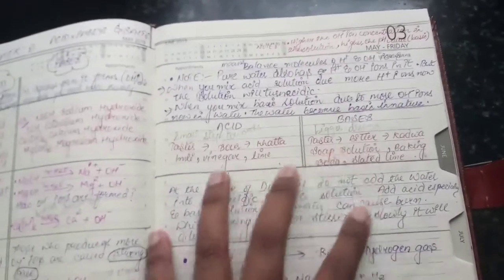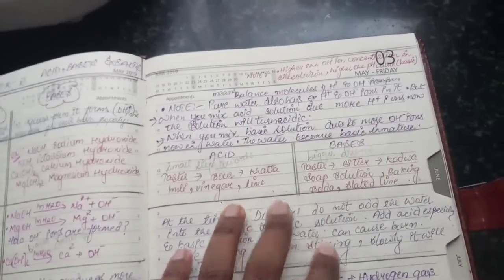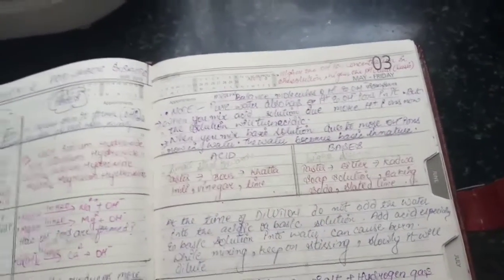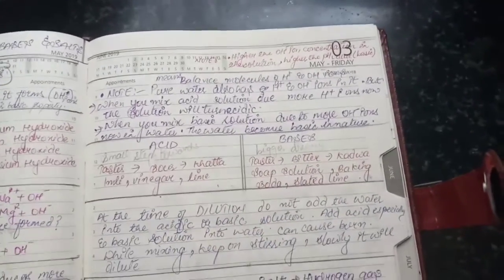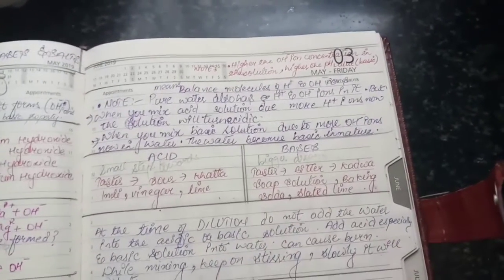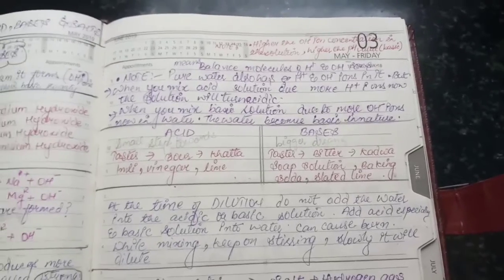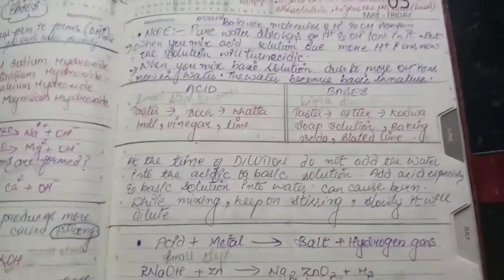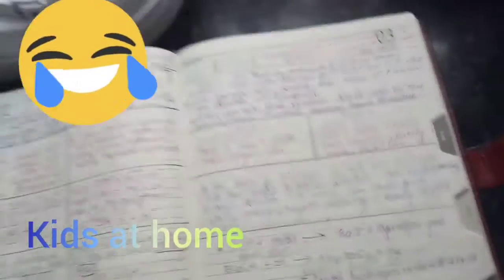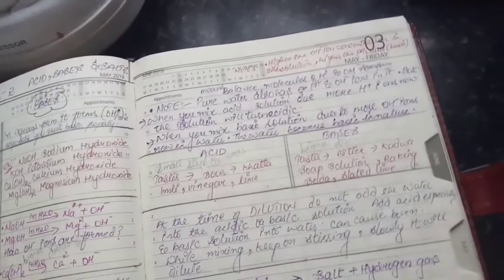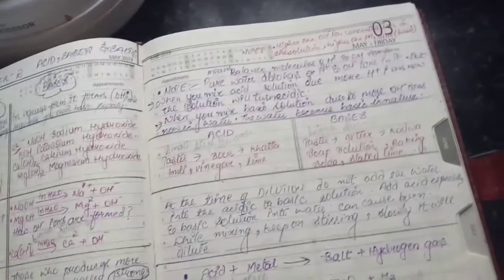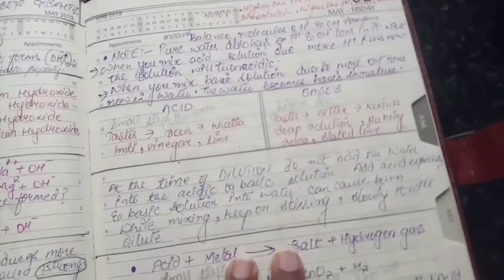As we have seen, inside the acid it is sour taste. Base is bitter taste. If you haven't tasted baking soda, you can taste the baking soda. So let's start with the acid basis. What happens during dilution?